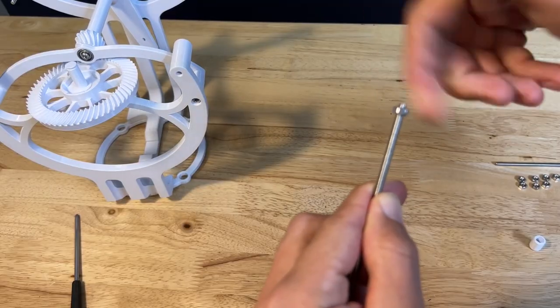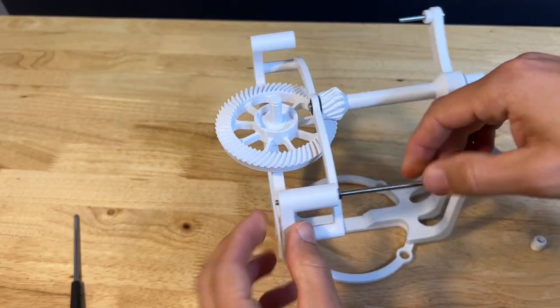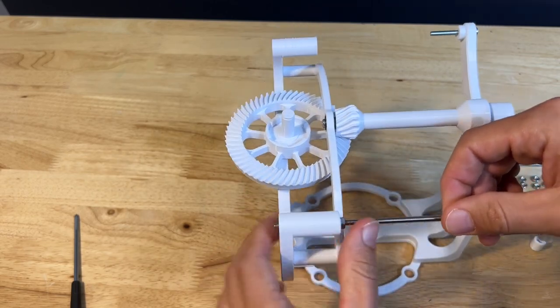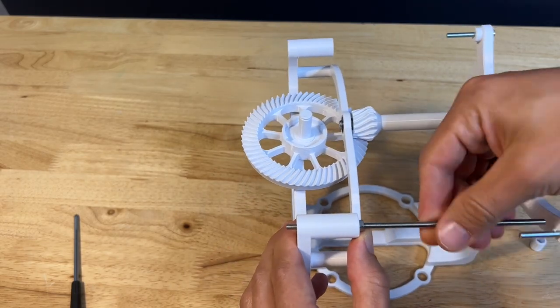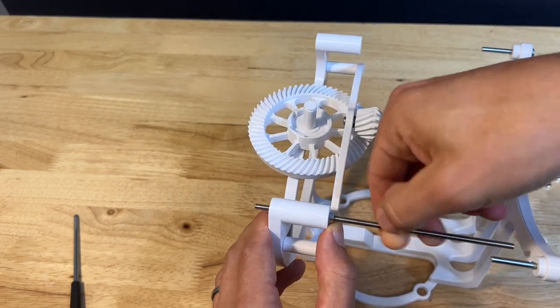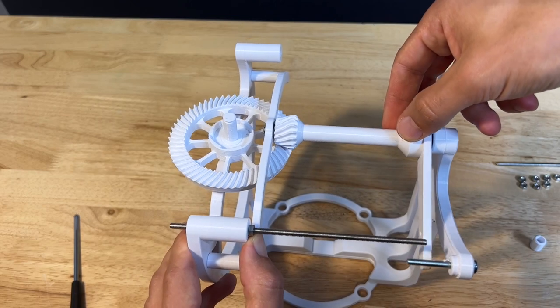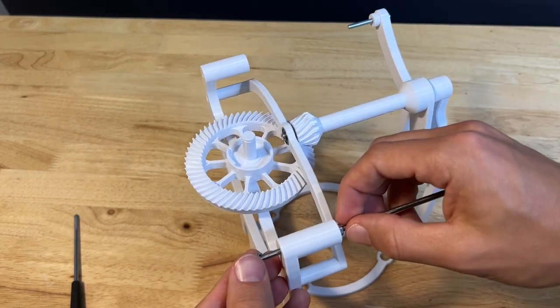Twist an M4 knot onto the end of the M4 threaded rod. And then slide it into the hole on the base. And then you're gonna have to turn it down until you get to a point where the swing arm can clear the top of the rod. This looks pretty good.